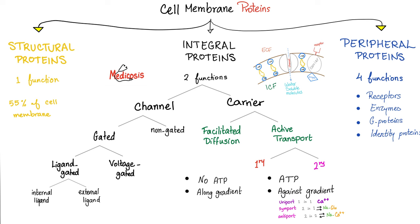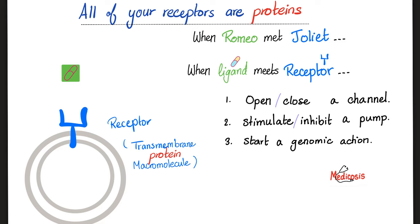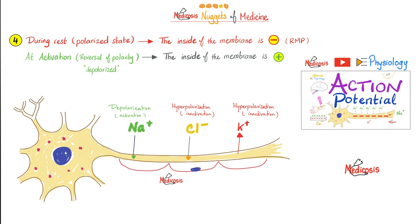Receptors are proteins. All of your receptors are proteins. No exception. When Romeo met Juliet is when the ligand meets the receptor. And then what's gonna happen when they meet each other? You can open or close a channel, stimulate or inhibit a pump, or start a genomic action. During rest, your resting membrane potential is negative. The inside is more negative because potassium is leaving.